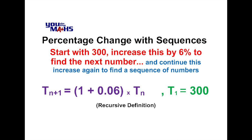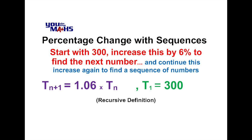We can also write 1 plus 0.06 as 1.06. Some people will find it very easy to write down 1.06 straight away, because all it is is 1 plus the percentage increase as a decimal. And that's what we use in our sequence rule for multiplying by the term t(n).